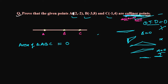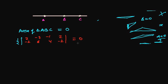Area of the triangle will be zero only when there is no triangle at all. So let's find the area of the triangle now. To find the area, we use one-half times the determinant formula. The first point is (2, -2), the second point B is (-3, 8), and the third point C is (-1, 4). We need to repeat the first point again on the right side.